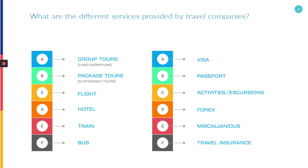What are the different services provided by travel companies? Group tours, also called fixed departures, are organized a couple of months before the tour departure with dates and rates. These tours include flights, hotels, transfer, and sightseeing. They involve a group of families or guests, and very few companies organize such kind of tours.